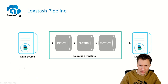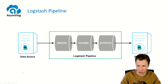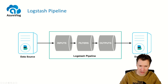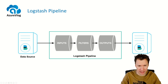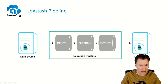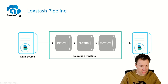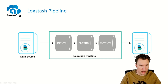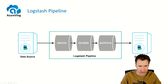If we zoom in on Logstash, you'll see it consists of three main components: an input component, a filter component, and an output component. These components are filled in with plugins. We have input plugins to collect data, filter plugins to transform the data and do something with it, and output plugins to send our transformed data over to another data source.